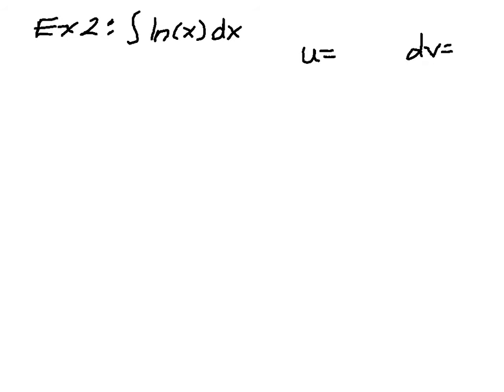But the weird thing is that there only appears to be one thing, right? All I have is natural log of x. I definitely know how to take the derivative of that, so I'm going to make that be u. That's natural log of x. And then what's left over? Well, the only thing left over is dx.